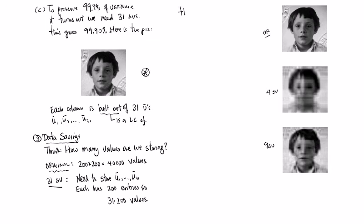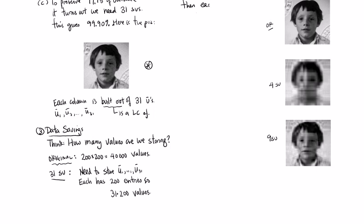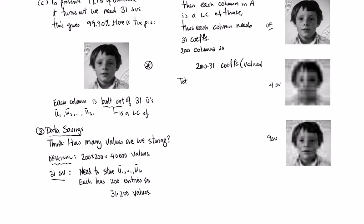So this is 31 times 200 values. All right, then, for each column in A, each column in A is a linear combination of those. Each column in A is a linear combination of those. Therefore, each column needs 31 coefficients. There are 200 columns. So there are 200 times 31 coefficients. Those are also values. So the total here is 31 times 200 plus 200 times 31. Doesn't matter the way that we write these. This is 12,400 values.